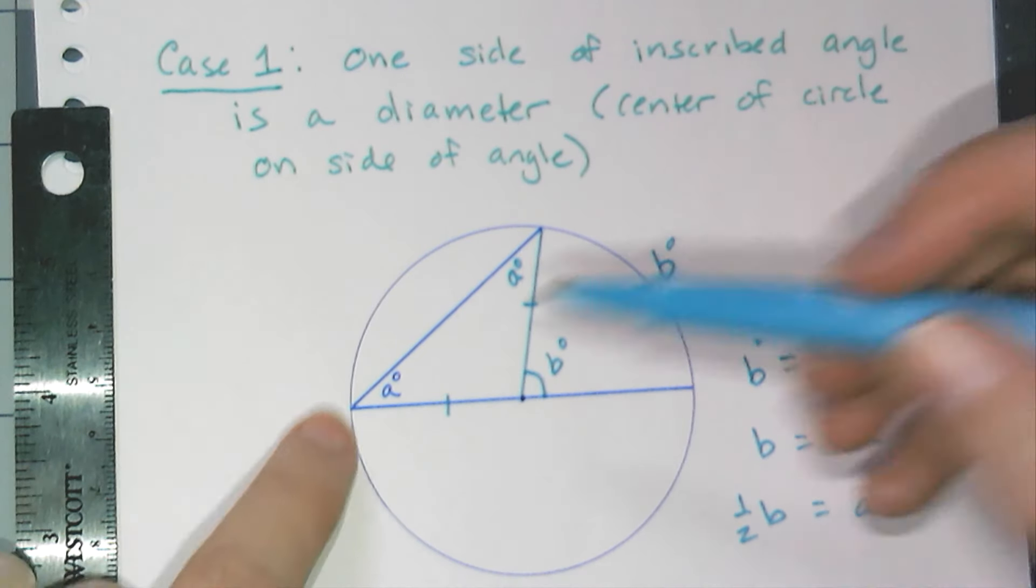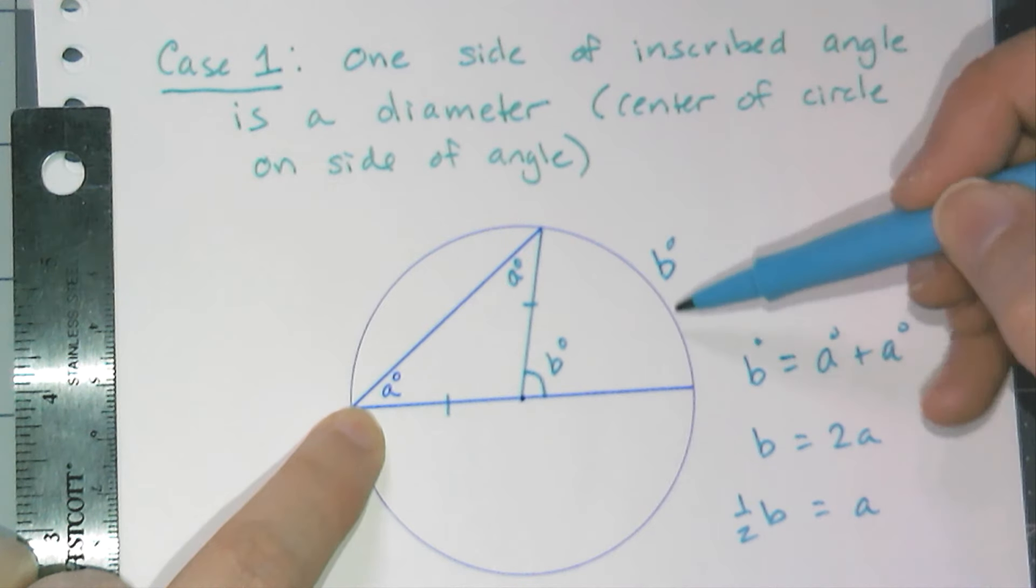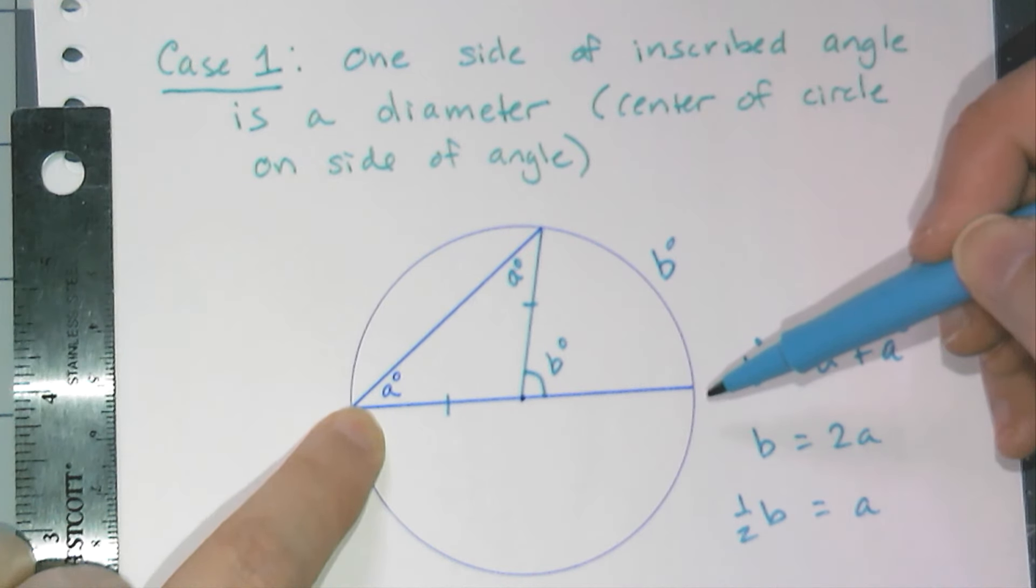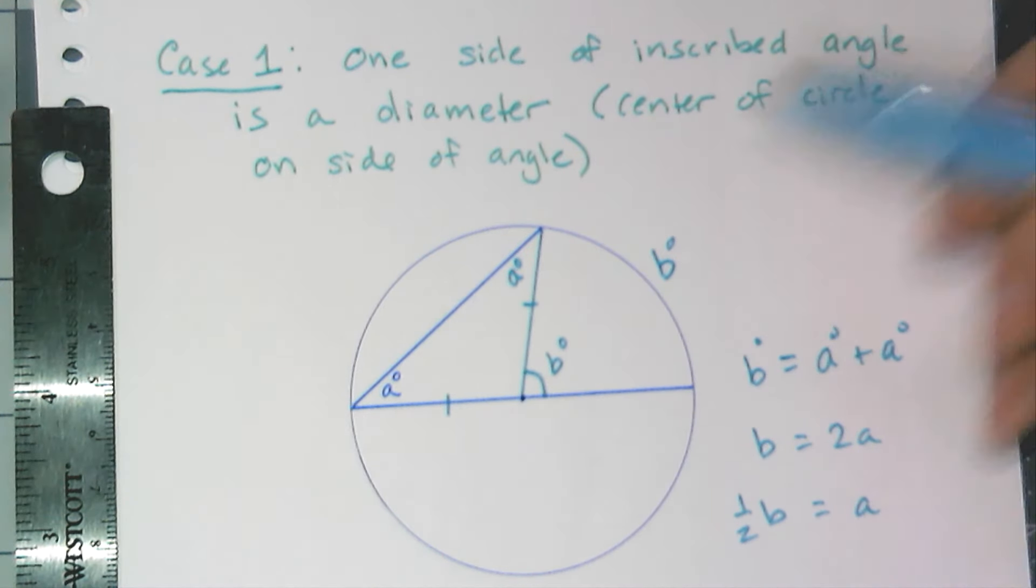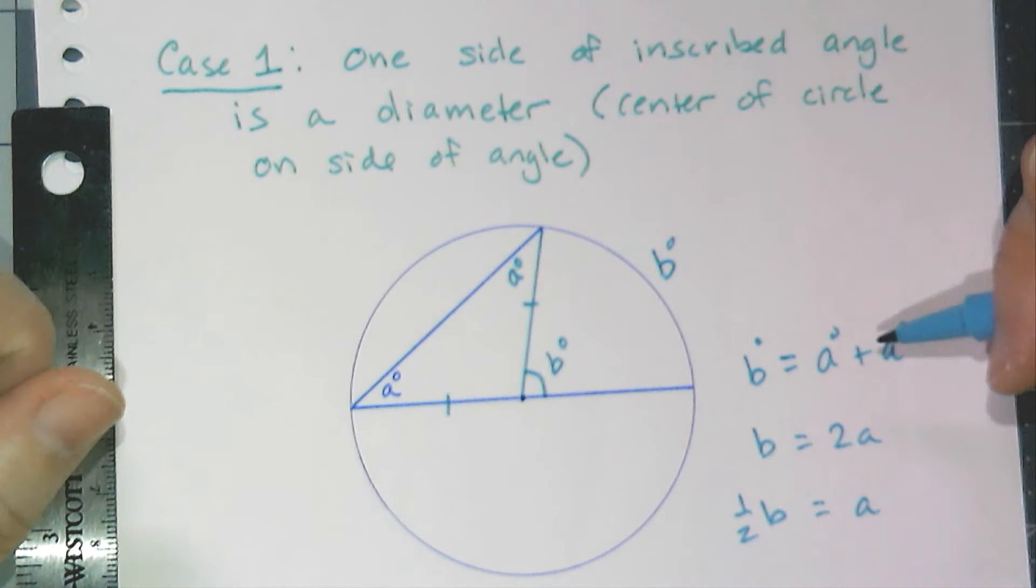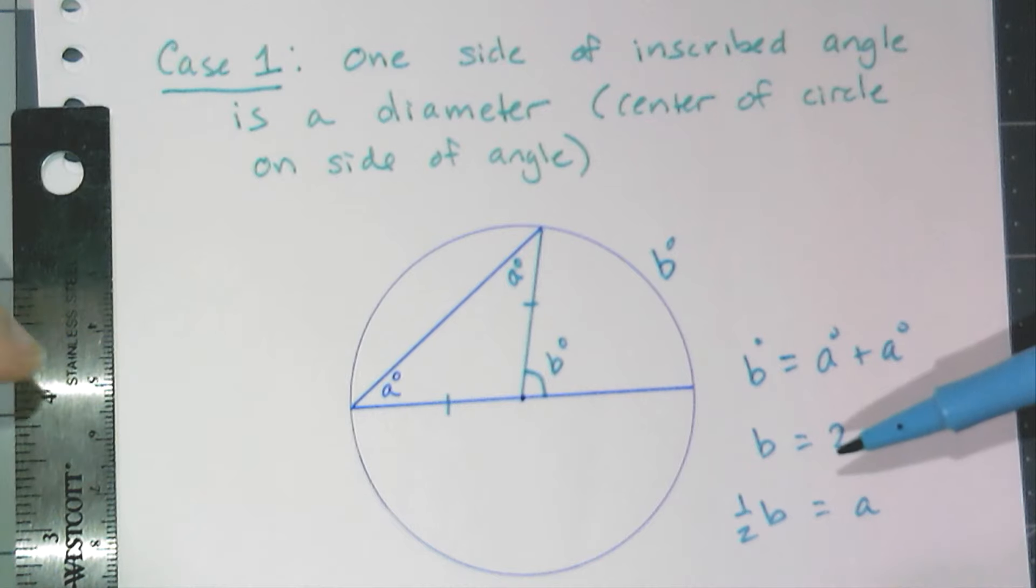So that means this angle measure is half that arc measure, right? And that was pretty simply proven. I just had to add a radius in, use my isosceles triangles, use my exterior angle there, and I have a proof.